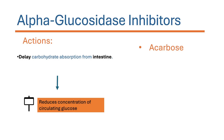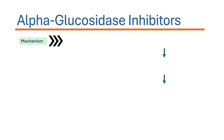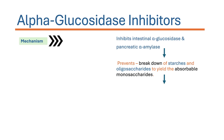Examples of alpha glucosidase inhibitors include acarbose and miglitol. Regarding the mechanism of action, alpha glucosidase inhibitors inhibit intestinal enzymes such as alpha glucosidase and pancreatic alpha amylase. By inhibiting alpha glucosidase, they prevent the breakdown of starch.